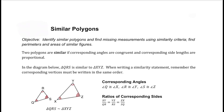Today we're looking at similar polygons. We're trying to identify similar polygons and find missing measurements using similarity criteria, find perimeters, and areas of similar figures. Two polygons are similar if all of the corresponding angles are congruent and all of the corresponding side lengths are proportional.